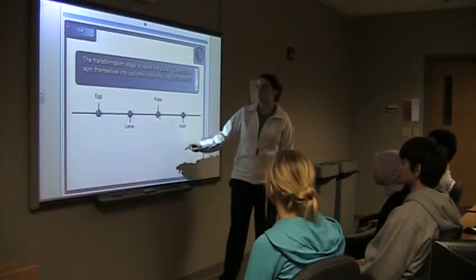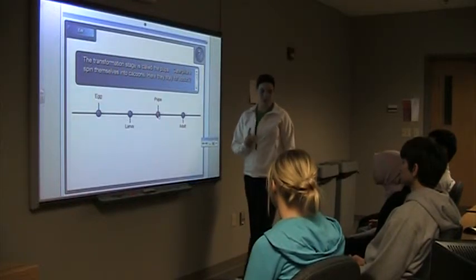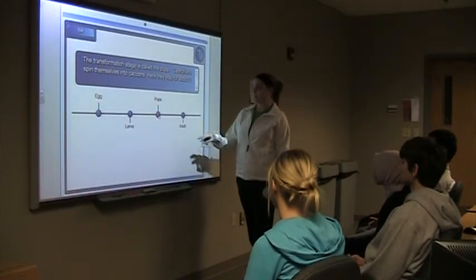Third is the pupa. The transformation stage is called pupa. Caterpillars spin themselves into those cocoons, those green things. And they stay there for about 2 weeks.